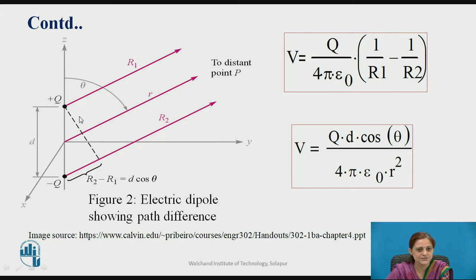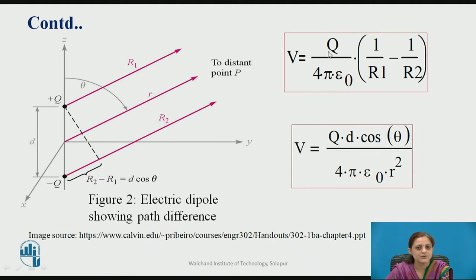When point P is far away from the dipole, R1 is seen to be parallel with R2, and R1 becomes equal to small r. The additional difference can be written as R2 minus R1 equals d cos theta. Substituting into V equals Q upon 4 pi epsilon naught times (1/R1 minus 1/R2), and replacing the difference R2 minus R1, we get V equals Qd cos theta upon 4 pi epsilon naught R squared. This is the equation for the potential due to the dipole.